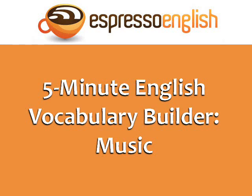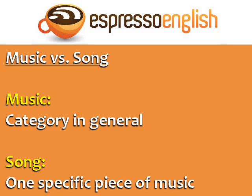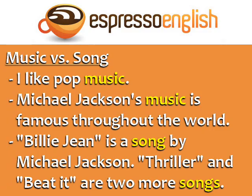Five-minute English vocabulary builder: music. One common error in English is confusing the words music and song. Music refers to the category in general, and song refers to one specific piece of music. For example, I like pop music — that's pop music in general. Michael Jackson's music is famous throughout the world; again, music refers to his music in general. Billie Jean is a song by Michael Jackson — we use song because it's a specific piece of music.